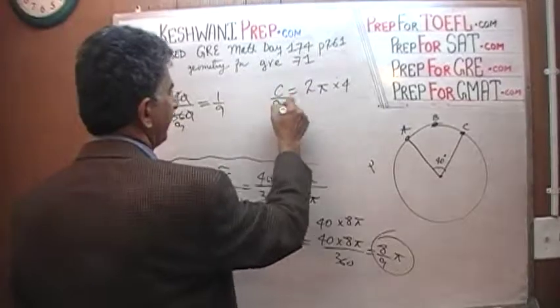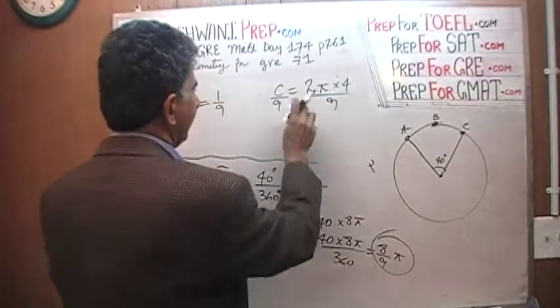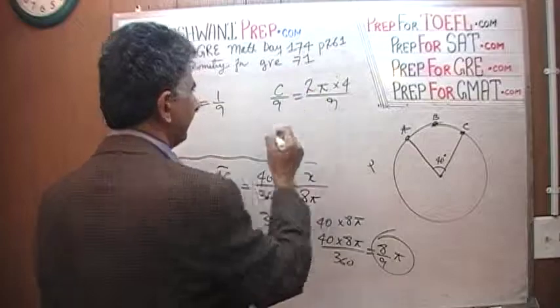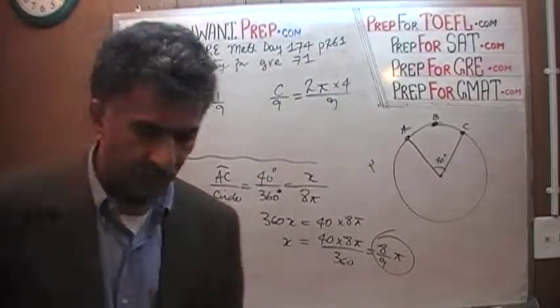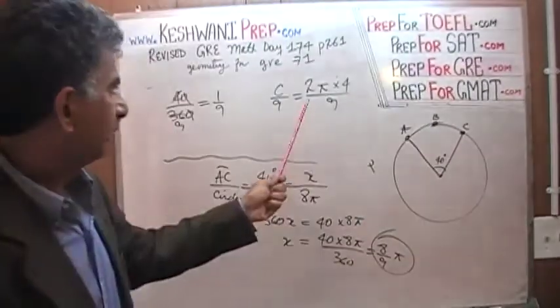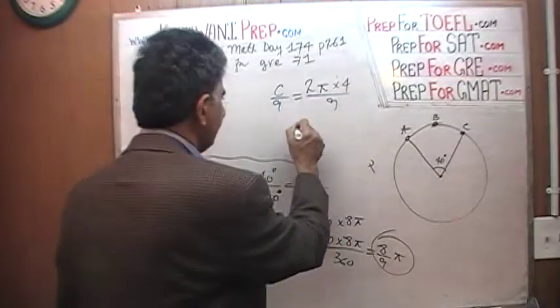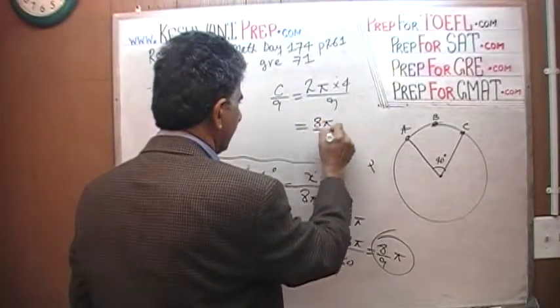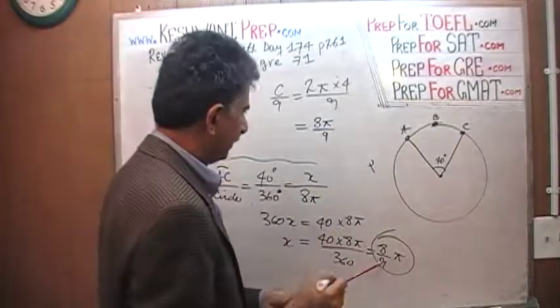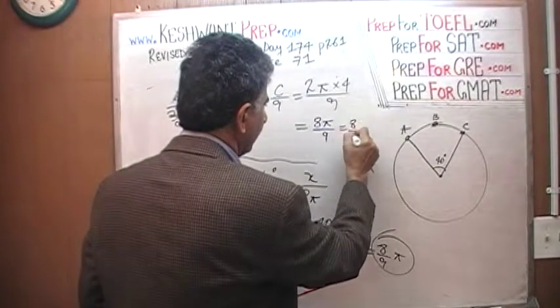We know that whole circle is 2πr, which we know is 4, and we want a 9th of it, so divide both sides by 9. That's what it is, and we find the same thing as before. We find the exact same thing as before, which is 2 times π times 4, which is 8π, 8π over 9, which I wrote here as 8 over 9π. Exact same thing, no difference.